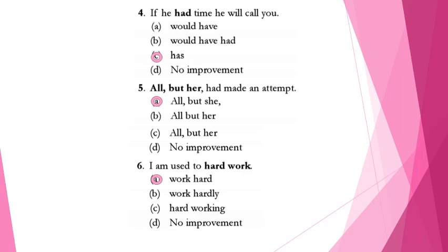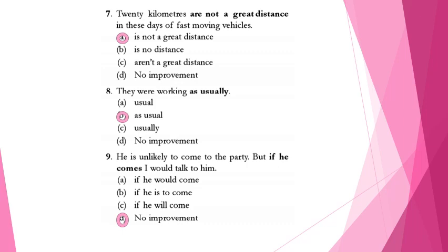Example 7: '20 kilometers are not a great distance' — when 20 kilometers is treated as one unit, the verb must be singular: '20 kilometers is not a great distance.' Example 8: 'They were working as usually' — this is wrong; the correct expression is 'they were working as usual,' as we always say 'as usual' in spoken language. Example 9: 'He is unlikely to come to the party, but if he comes, I'll talk to him' — this expression is correct, so no improvement is needed.